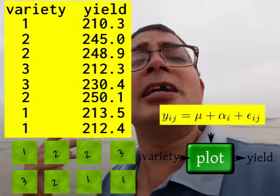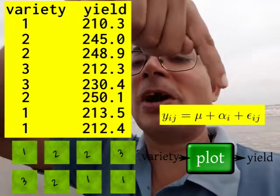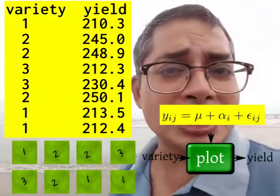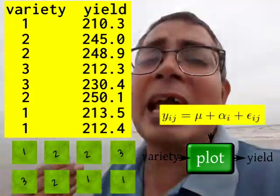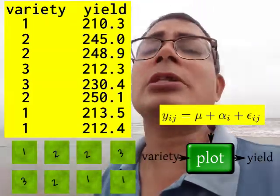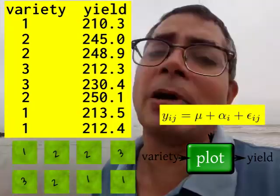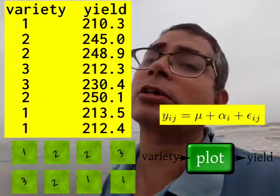of this type of crop irrespective of the variety. And alpha 1, alpha 2, alpha 3, they have the interpretation of being the additional effect due to that variety. So now the alpha_i's give you the additional effect over and above the mean effect for that crop.